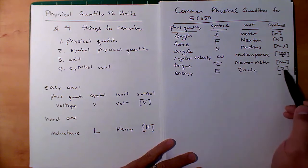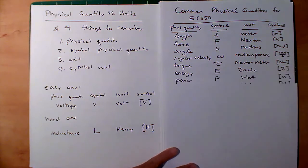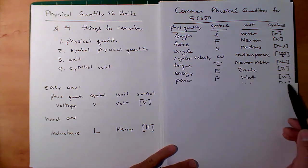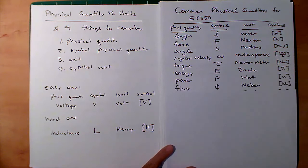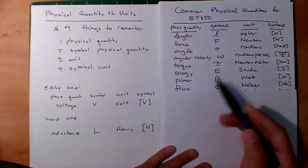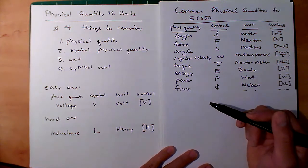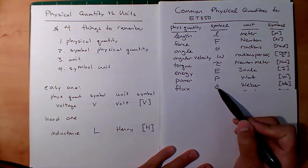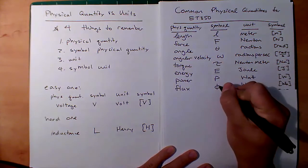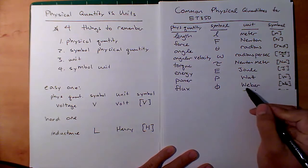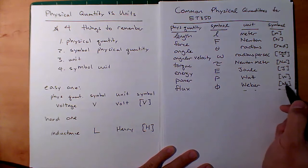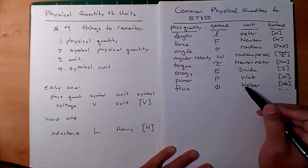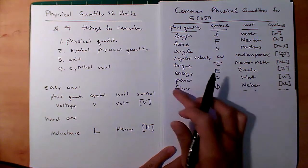Energy is E, joule, J. Power is P, watt, W. Now the new stuff we'll immediately need for ET350: flux, phi — the Greek letter phi, a circle with a line through it — and we use Weber for the units, symbol WB. Just got to memorize it. Remember these four things. There's a big distinction coming up: flux density. Symbol B, unit Tesla, capital T. Flux is phi in Webers; flux density is B in Teslas — got to know the difference.